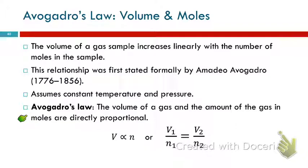And it's called Avogadro's law. The volume of a gas and the amount of gas in moles are directly proportional. This assumes constant temperature and pressure. So we can say the volume is proportional to N. N is the symbol we use for amount of gas in moles. Or the way that's more useful for solving our problems would be this one: V1 over N1 equals V2 over N2.